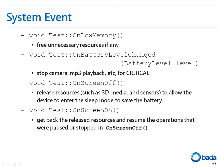Now I would like to explain the part that handles system events. Since the onLowMemory function is called when the available memory is extremely low, it is necessary to free any memory resources that are not currently being used by the application. The onBatteryLevelChanged function is called when the battery level changes. If the battery level is reported as critical and the remaining battery power is extremely low, this function should quickly stop any power-consuming functions such as camera and MP3 playing functions.